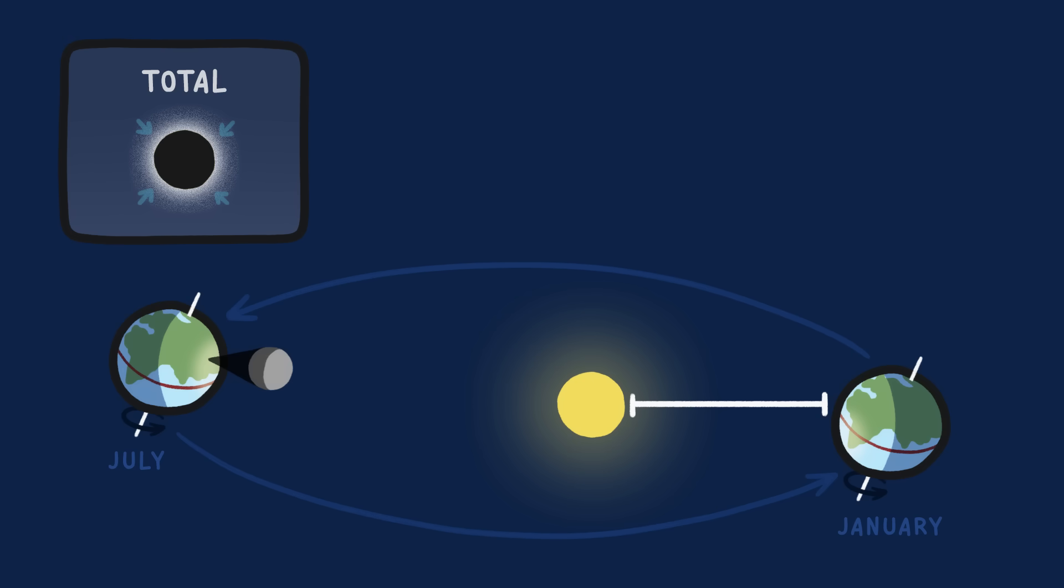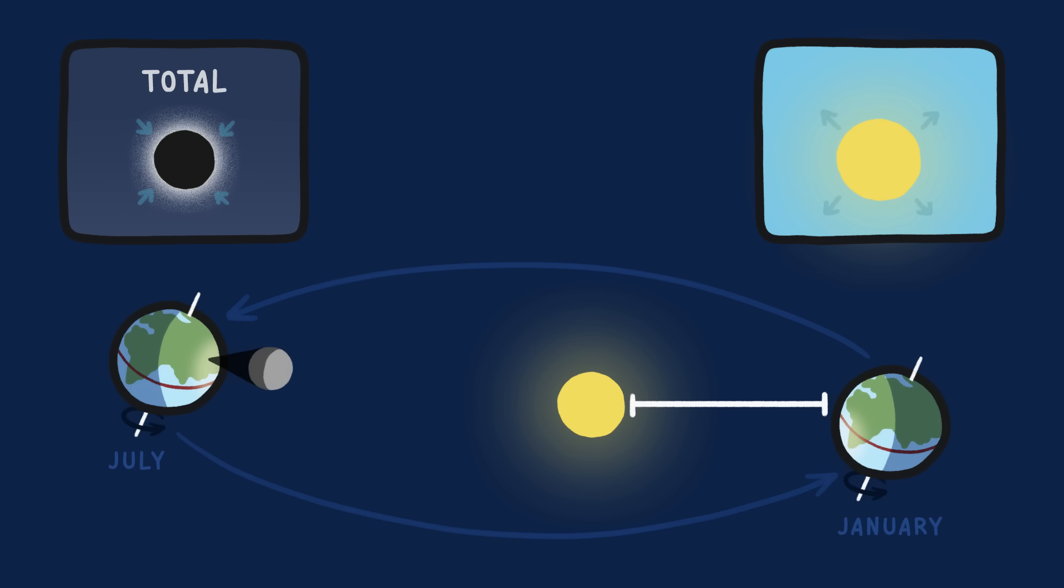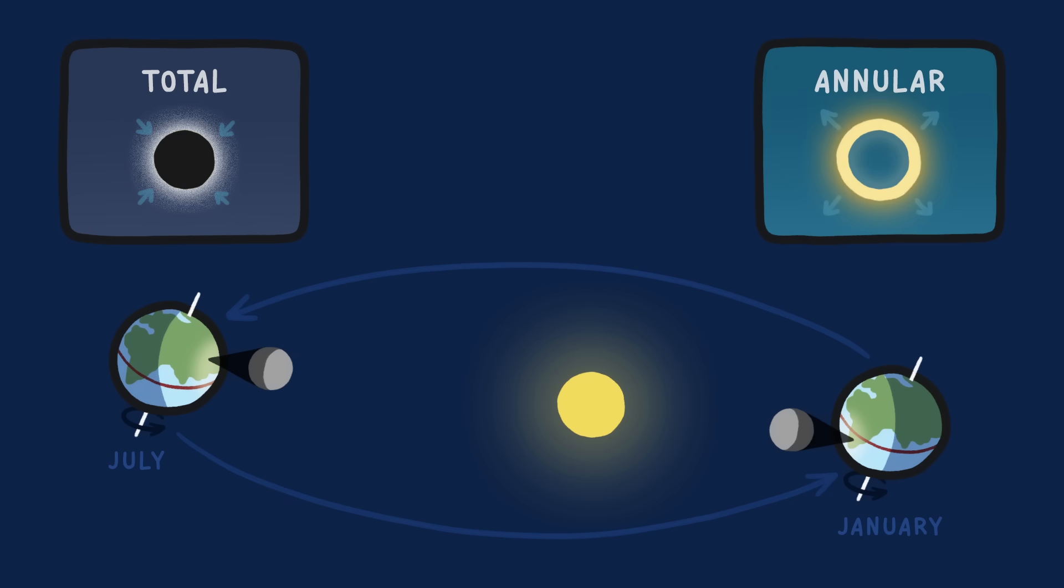But other times of the year, the Earth is closer to the sun, so the sun appears larger than normal. When the Earth, moon, and sun line up during these times of the year, the sun appears larger and the moon might not totally block it, creating an annular eclipse, which is when the moon turns the sun into a bright ring of fire in the sky.